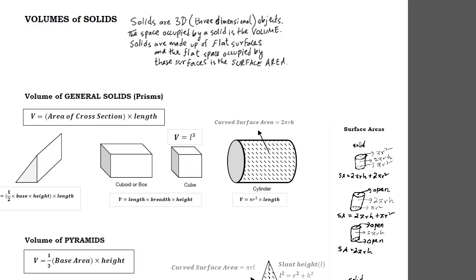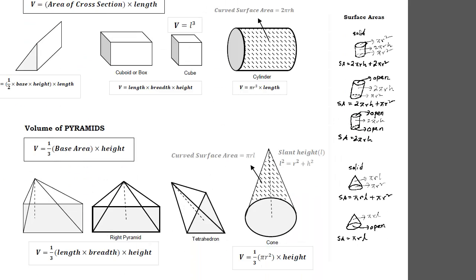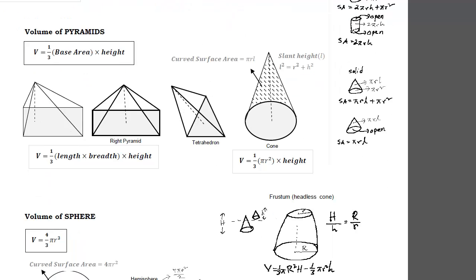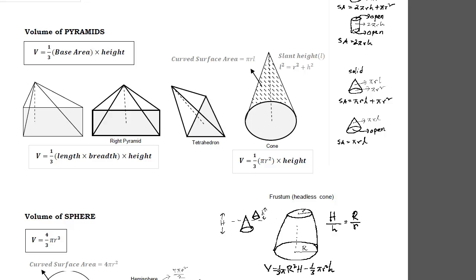Volumes are solid spaces. Prisms use the formula: area of cross section into length. Pyramids use: one third base area into height. Surface area refers to the area of the surfaces and must be added individually for what appears on the surface. A special type is the frustum, where the top of the cone is cut off. A sphere is another shape, and a hemisphere is half of a sphere. The surface area of a sphere is 4 pi r squared, and for a hemisphere it is 4 pi r squared divided by 2.